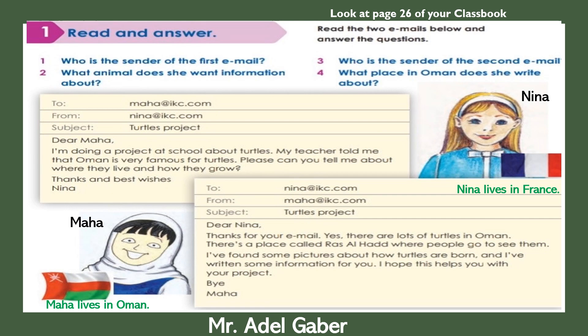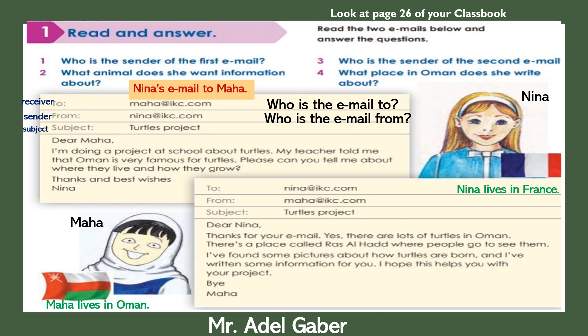Look at the first email — it is Nina's email to Maha. Look at the receiver, the sender, and the subject. Who is the email to? Yes, it is to Maha at IKC dot com. Who is the email from? It is from Nina at IKC dot com. What is the subject of the email? It is the turtle's project. Now look at the second email — it is Maha's email to Nina.